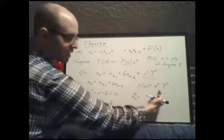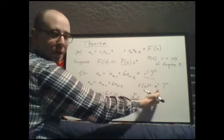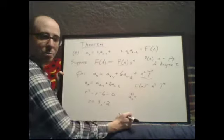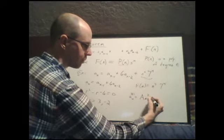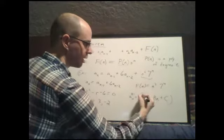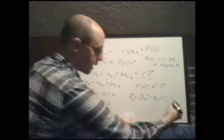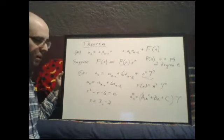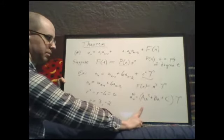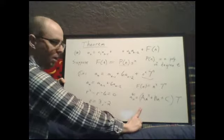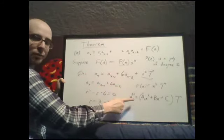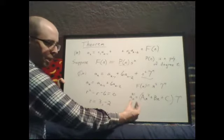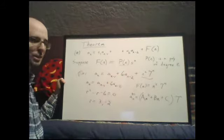So a_p(n) will have the same structure: an unknown degree-2 polynomial times 7 to the n. It can be any degree-2 polynomial, so it must be a·n² plus b·n plus c, times 7 to the n. We're not saying any function of this form solves the recurrence — we're saying there exists one of this form that does. We then solve for a, b, and c by plugging this into the recurrence.